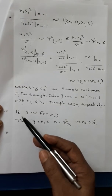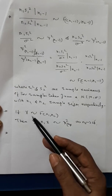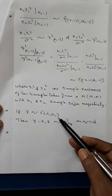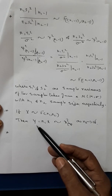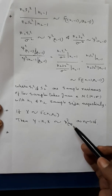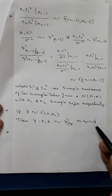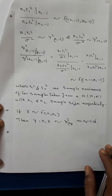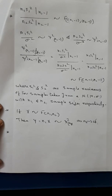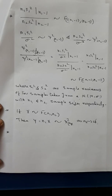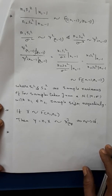Another example: if x follows f distribution with n1 and n2 degrees of freedom, then y equals n1 times x follows a chi-square distribution with n1 degrees of freedom as n2 tends to infinity. These are some of the interrelationships between normal, chi-square, t, and f distributions. Thank you for listening to the class.